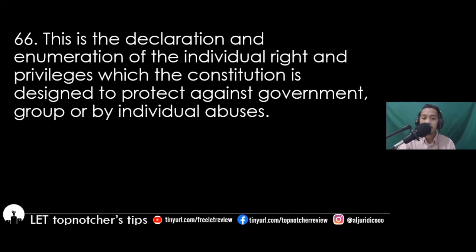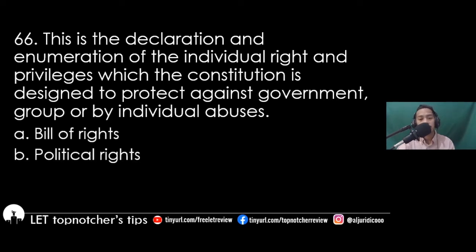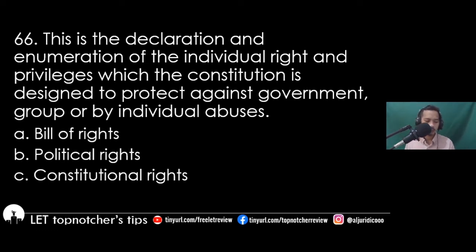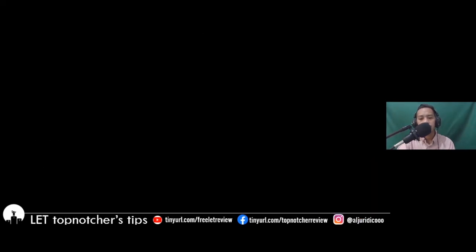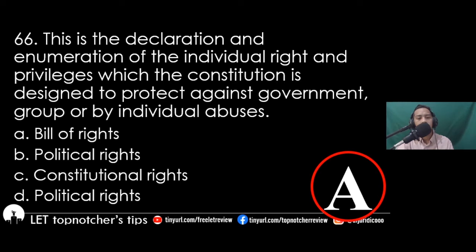Item 66: This is the declaration and enumeration of the individual rights and privileges which the Constitution is designed to protect against government, group, or individual abuses. A) bill of rights, B) political rights, C) constitutional rights, D) political rights. The best answer is letter A, bill of rights.